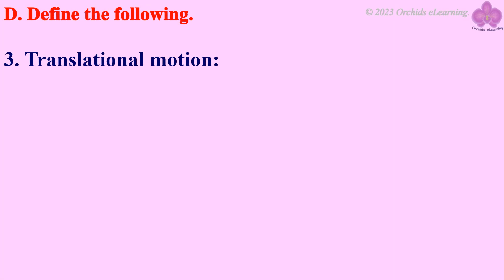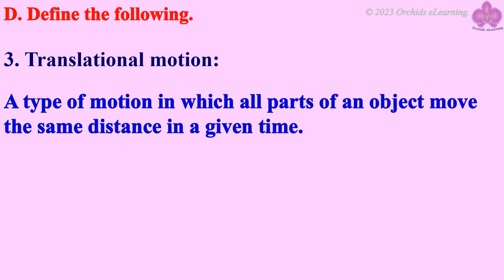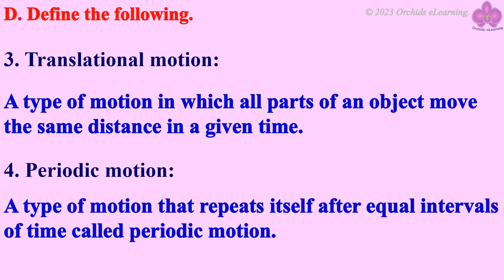3. Translational motion: A type of motion in which all parts of an object move the same distance in a given time. 4. Periodic motion: A type of motion that repeats itself after equal intervals.